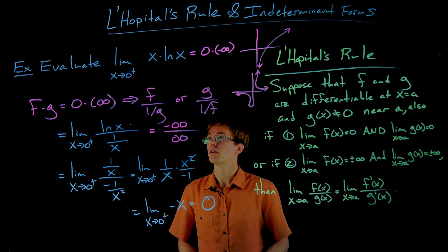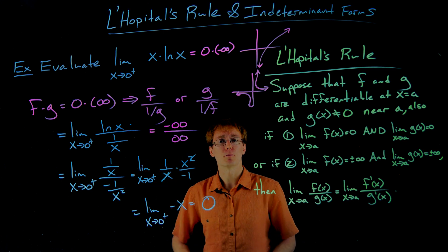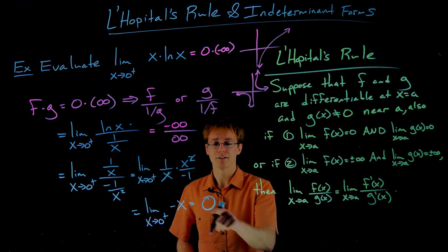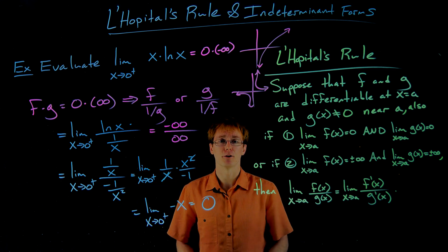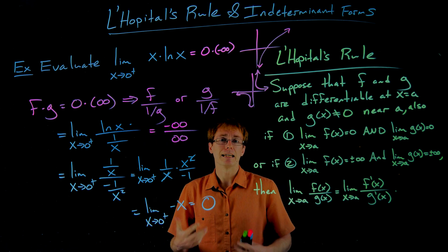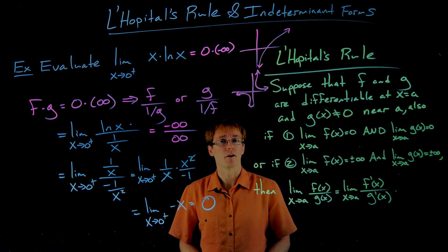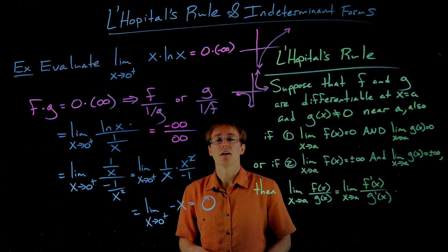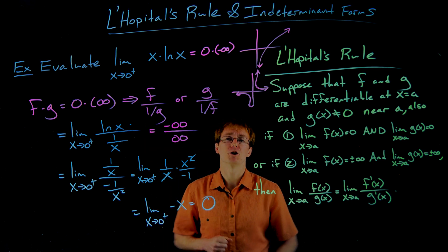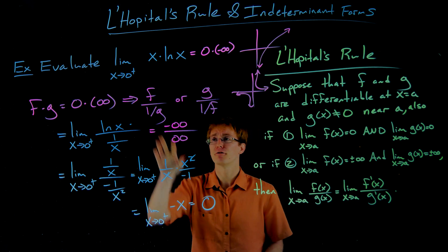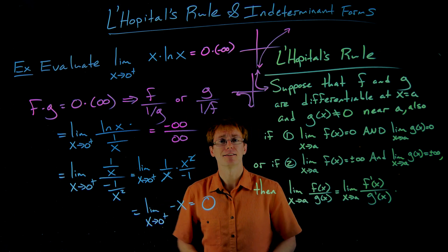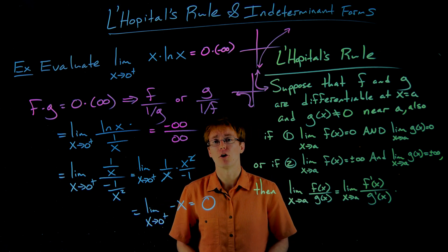So the limit as x approaches 0 from the right of x times the natural log of x equals 0. This is our go-to strategy for evaluating indeterminate products: rewrite as a quotient — f divided by (1/g) or g divided by (1/f). If your first choice doesn't work out, try the other option.